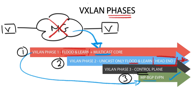EVPN mode reduces the flooding required to learn VTAP and host reachability information, which was previously carried out with flood and learn along with either IP multicast in the core or head-end replication.